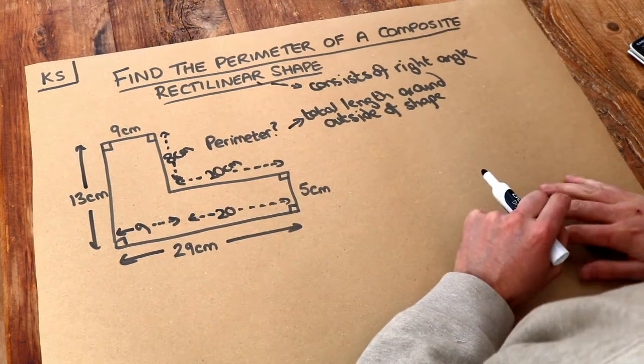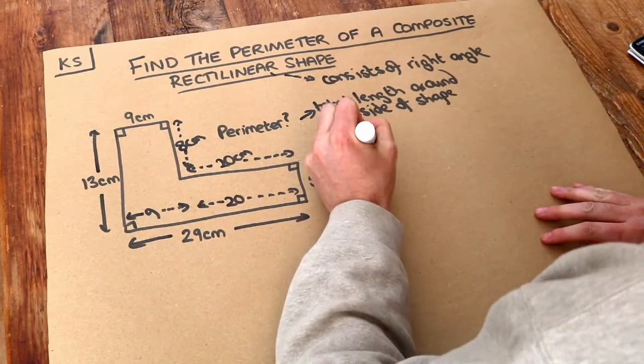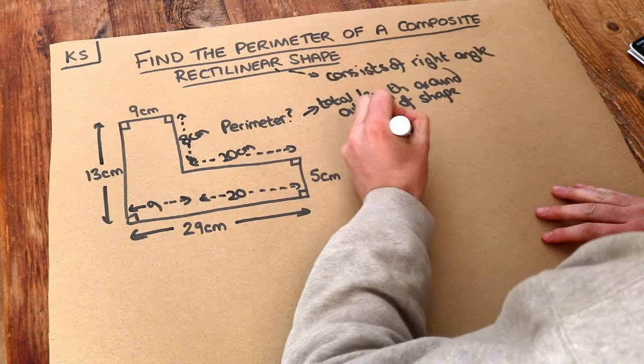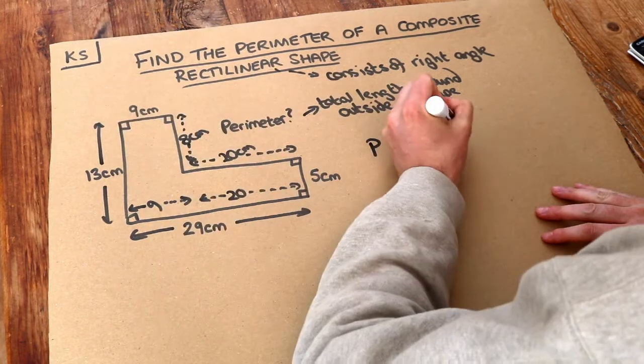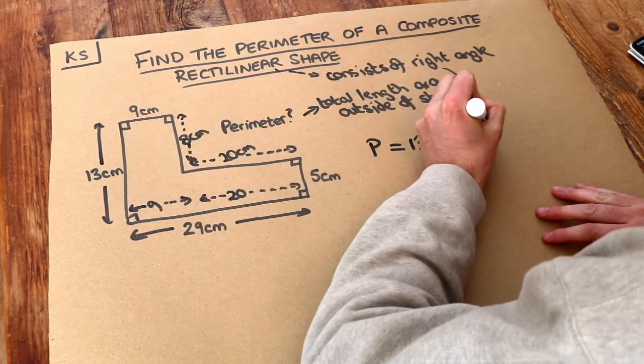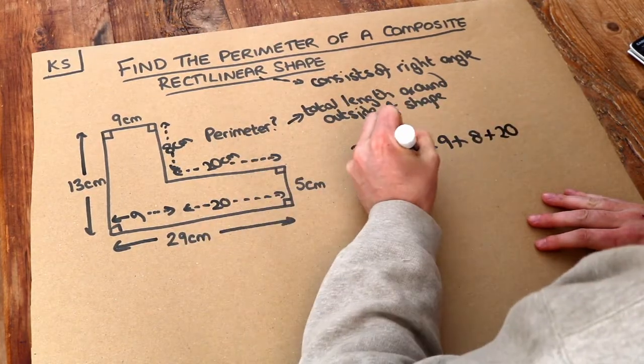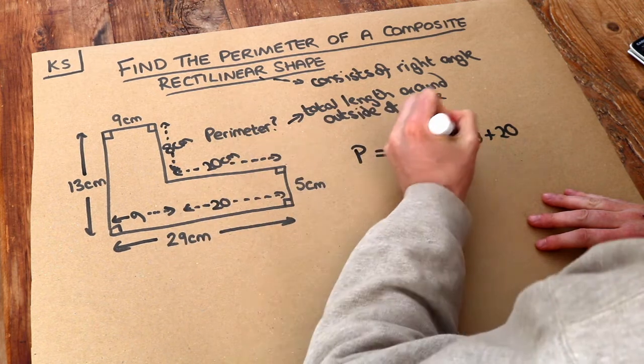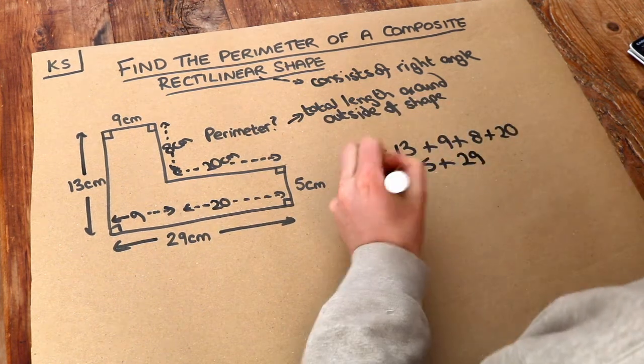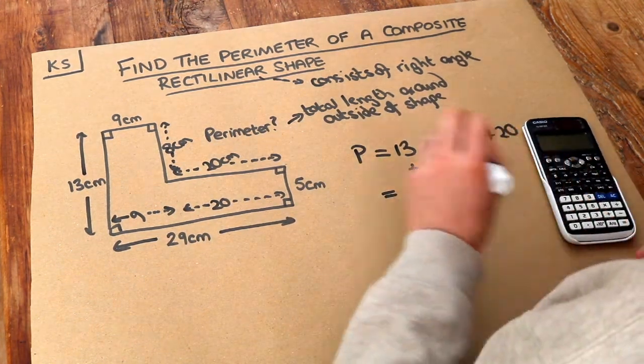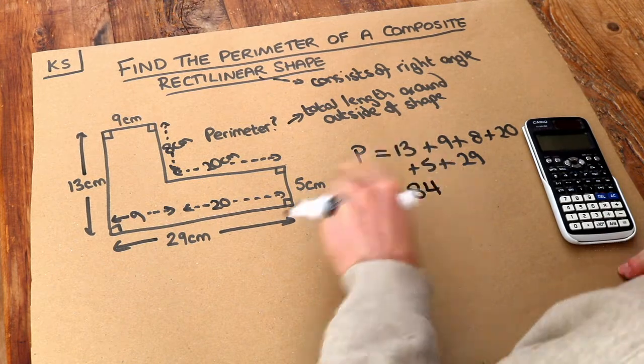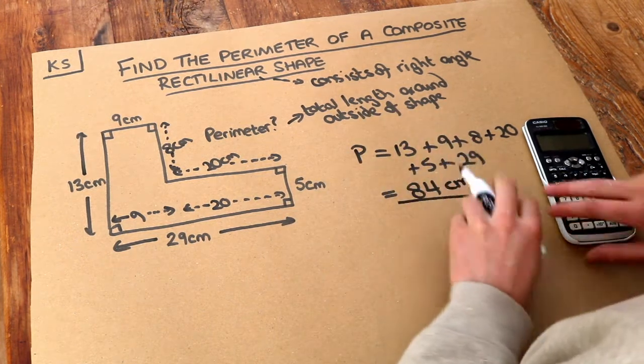And then we can just add all those lengths together. So the total perimeter is the 13 plus the 9 plus the 8. I'm going clockwise around the shape. Plus the 20 plus the 5 plus the 29. And that is all of them. So if we add them together, that gives us a total of 84 and the unit, centimeters. So that is the final answer.